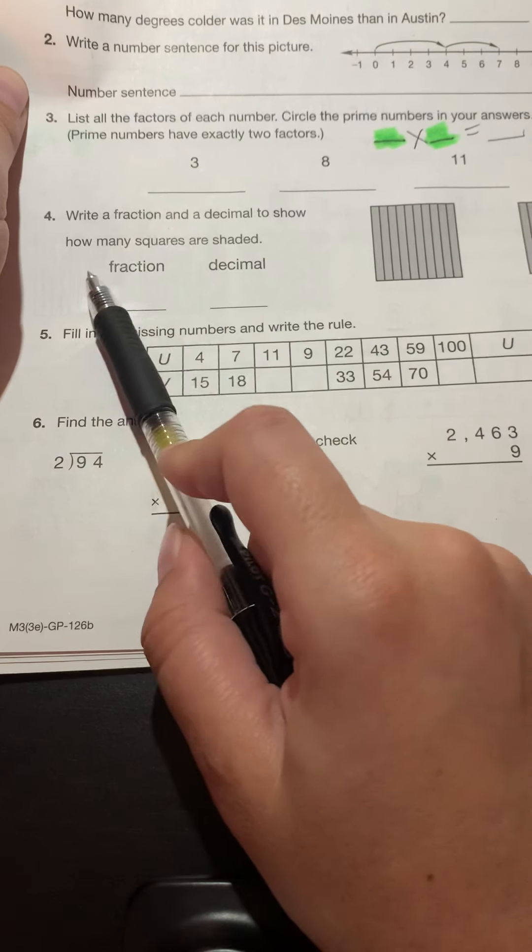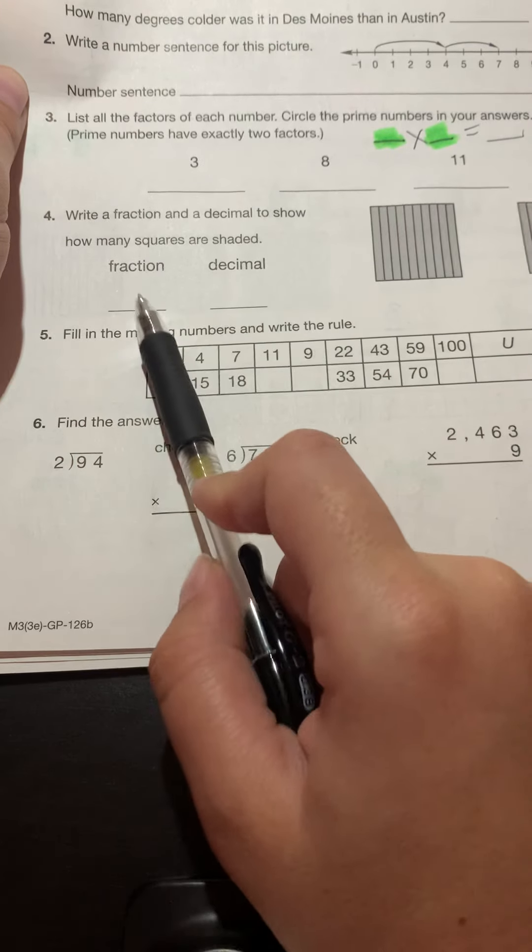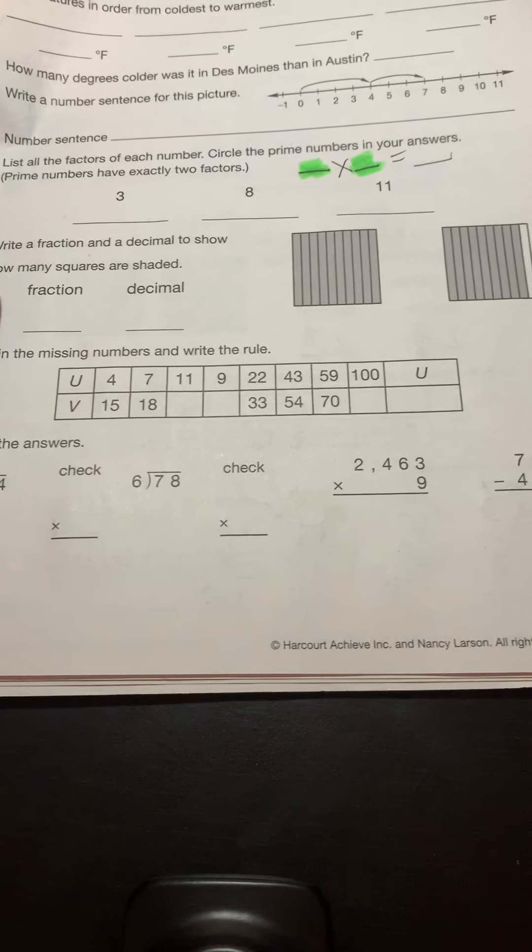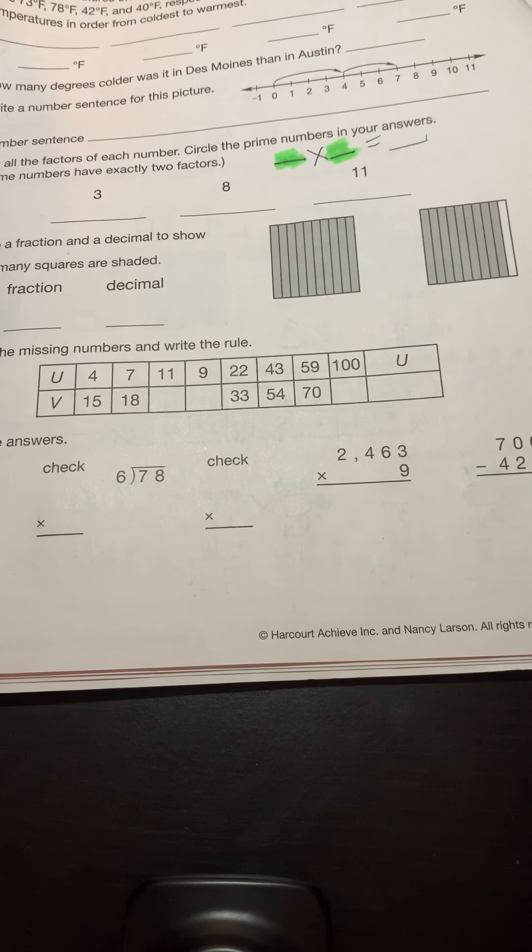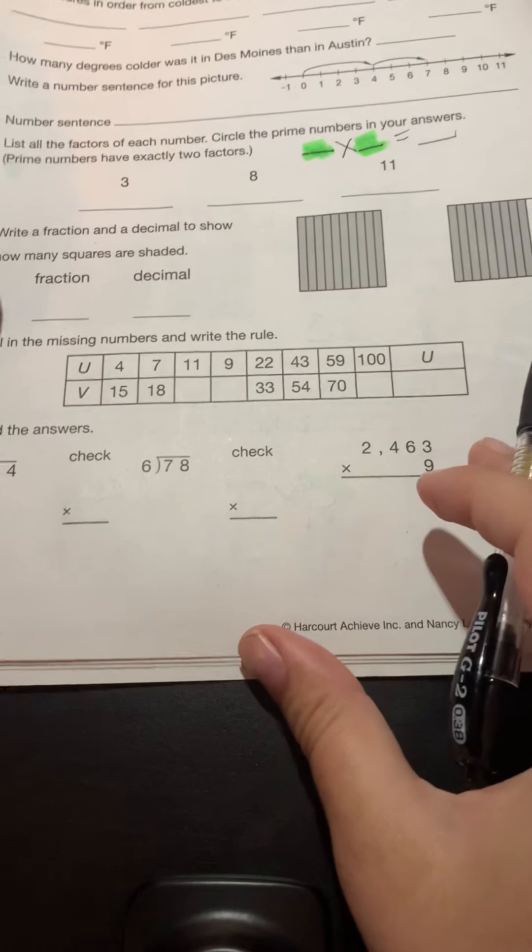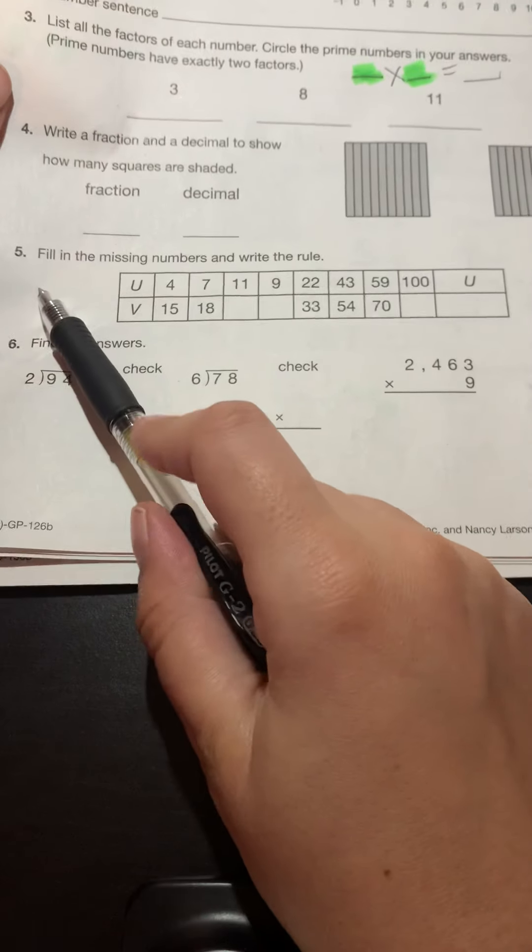Number four, write a fraction and a decimal to show how many squares are shaded. Fraction goes here. Decimal goes here. Start with the whole number and then write your fraction, which is number shaded over total number.